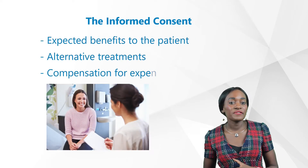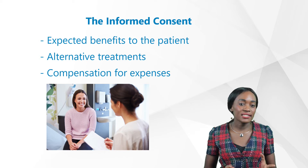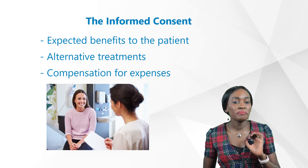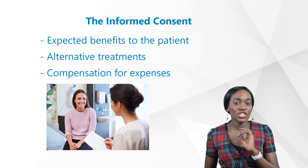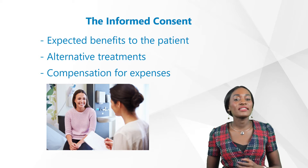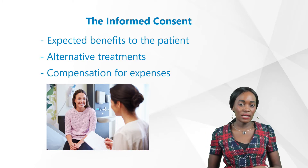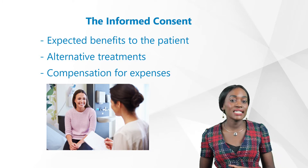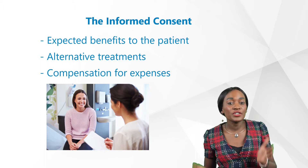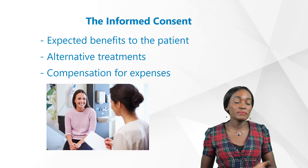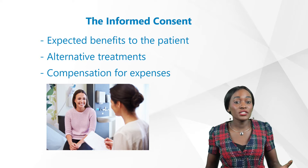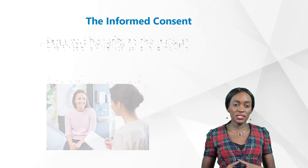Furthermore, the expected benefits to the patient need to be presented, or when there's no intended clinical benefit to the subject, the subject should be made aware of this and of the facts from which other patients may derive benefit in the future. Alternative treatments and the compensation or treatments available to the subject in the event of trial-related injury must also be provided in the informed consent. Compensation for expenses accrued by the subject in connection with the study must likewise be regulated in the informed consent — this refers to reimbursed values as well as to the rates of possible reimbursement.